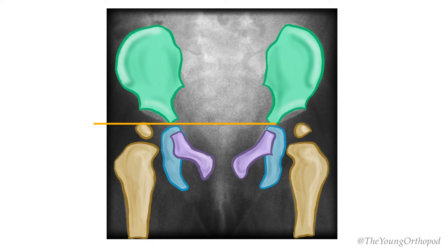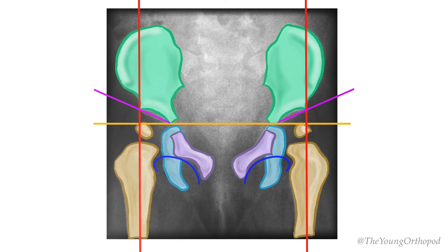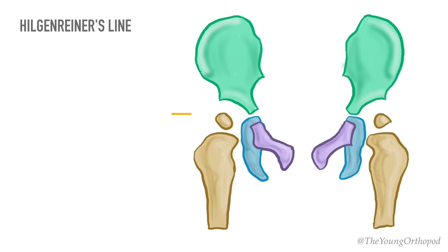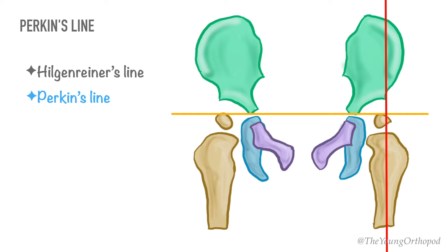Several classic lines on the x-ray of the immature pelvis guide the assessment of developmental dysplasia of the hip. The Hilgenreiner's line is a line joining the two tri-radiate cartilages. Perkins line is drawn at the lateral margin of the acetabulum and is perpendicular to the Hilgenreiner's line.